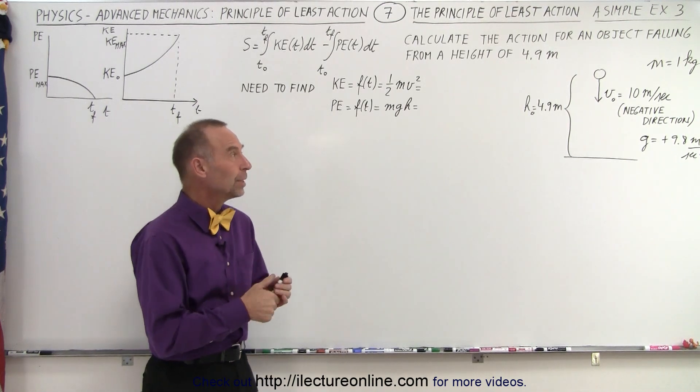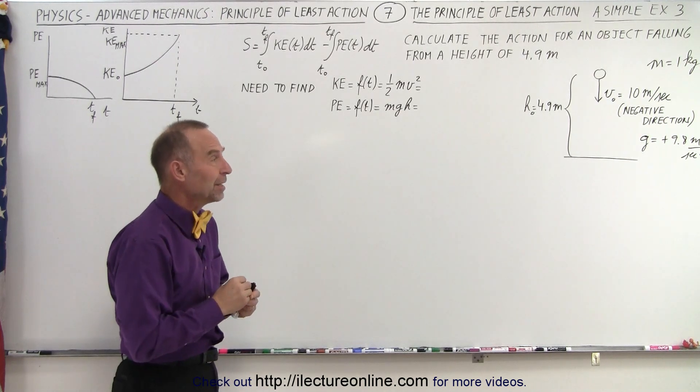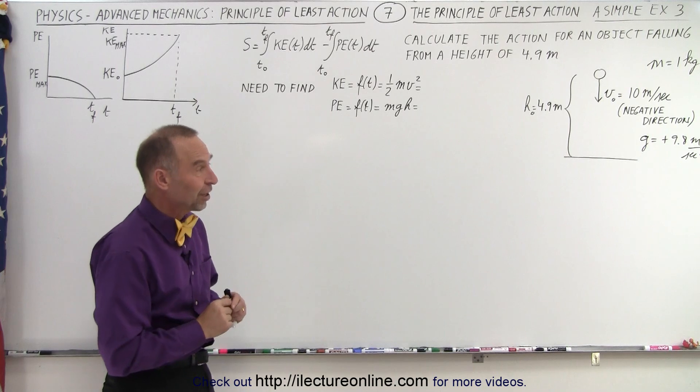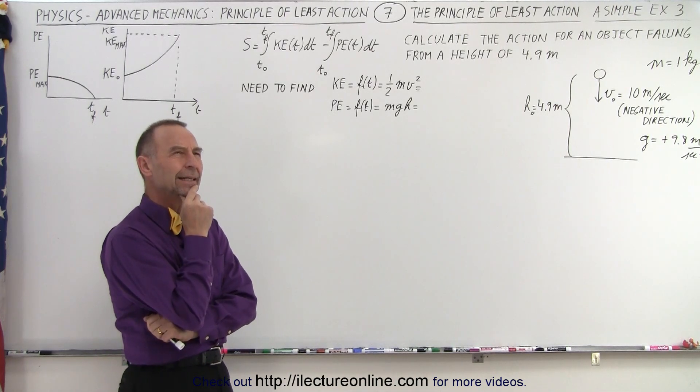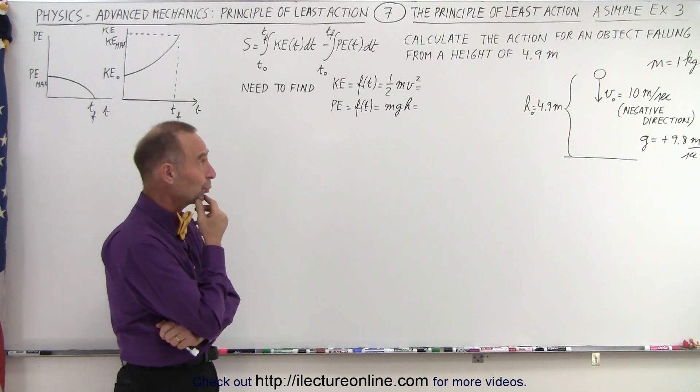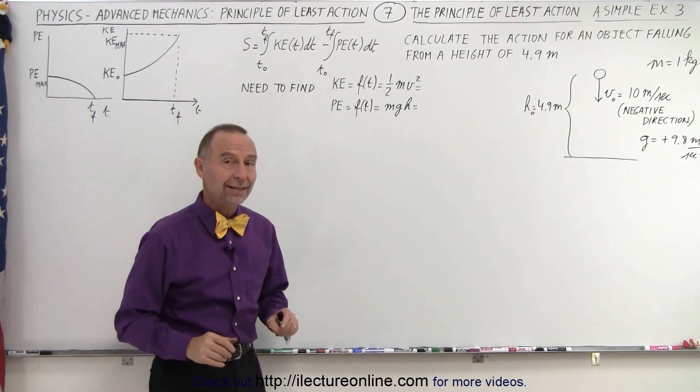What we're going to do here is calculate the action for an object. Instead of just dropping it from a height of 4.9 meters, we're going to throw it down with an initial velocity of 10 meters per second. Of course, then it reaches the ground a lot faster, so we'll have to find time in the air here as well. We're going to calculate the action of this particular case.